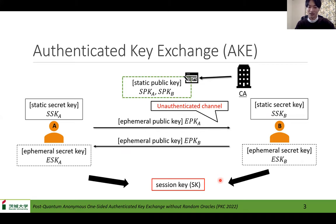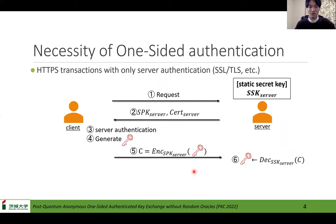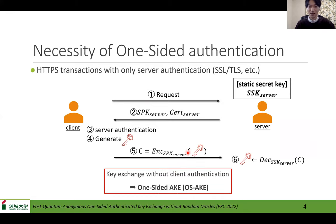However, in practice, mutual authentication is not required for some applications. For example, HTTPS transactions with only server authentication. In this example, the server returns the static public key and its certificate in response to the client's request. Then the client authenticates the server using these, and then exchanges keys. So for key exchange without client authentication, one-sided AKE may be sufficient. In this paper, the AKE with one-sided authentication is called OS-AK.